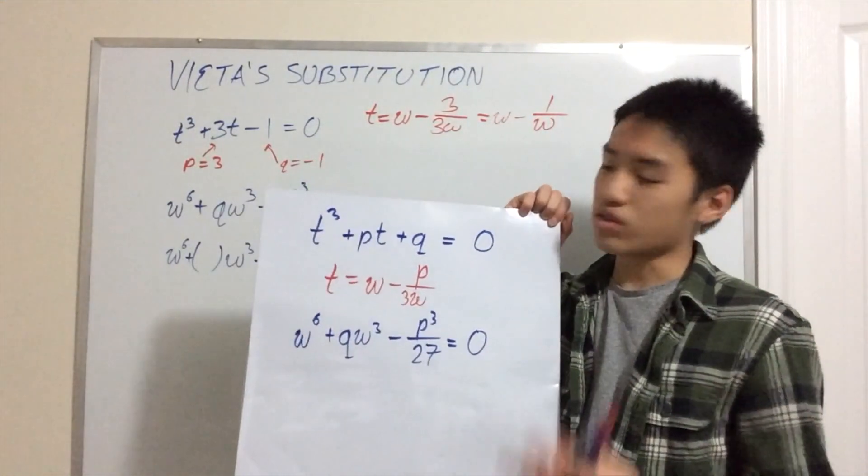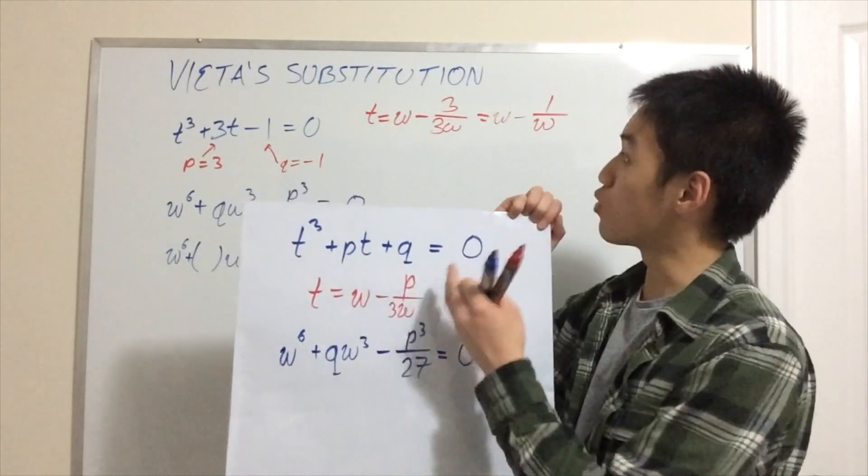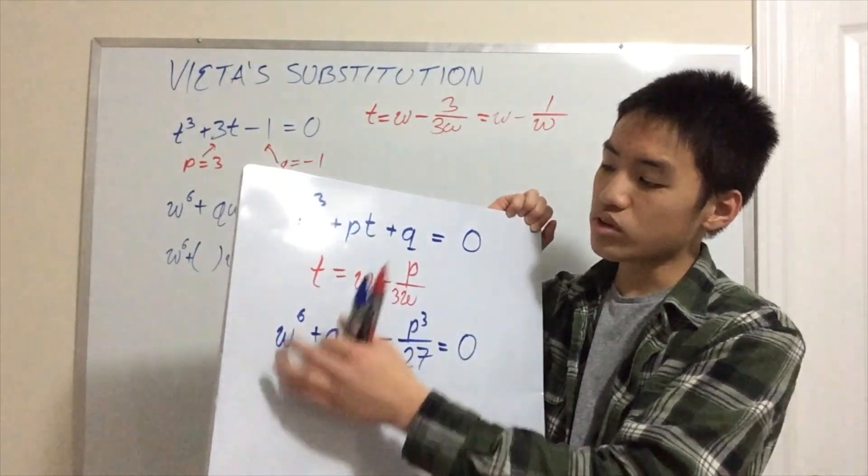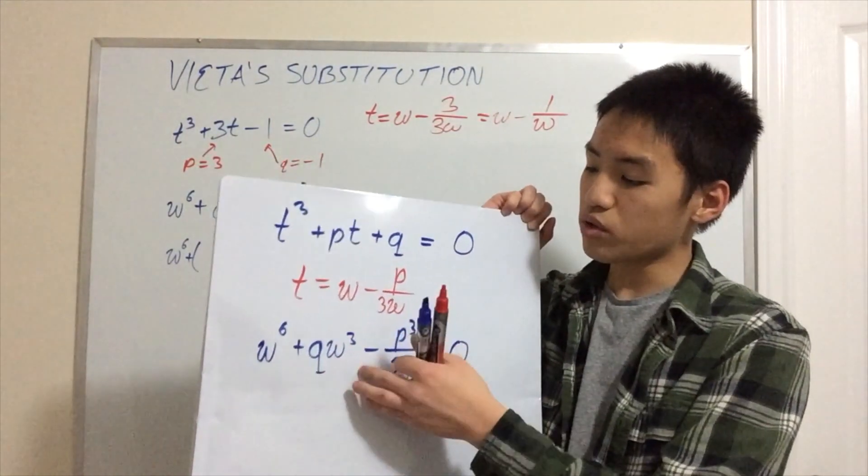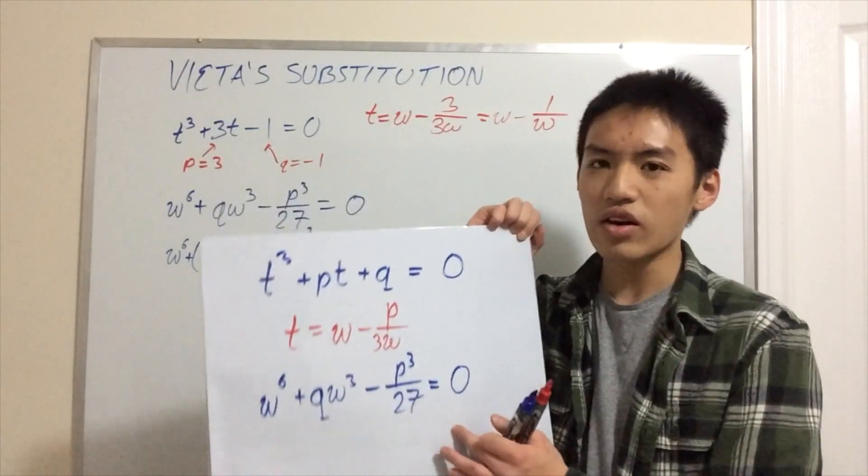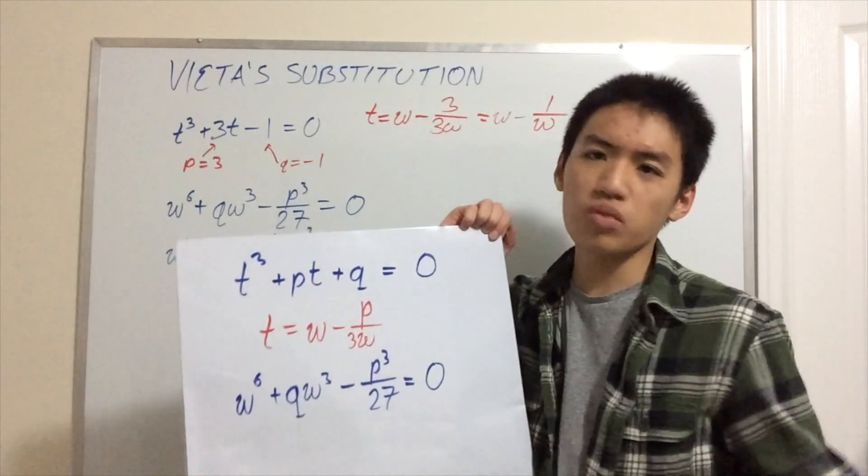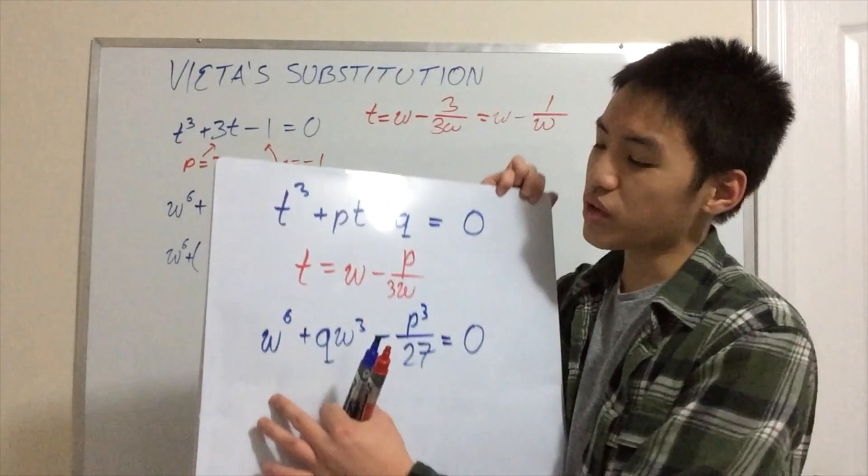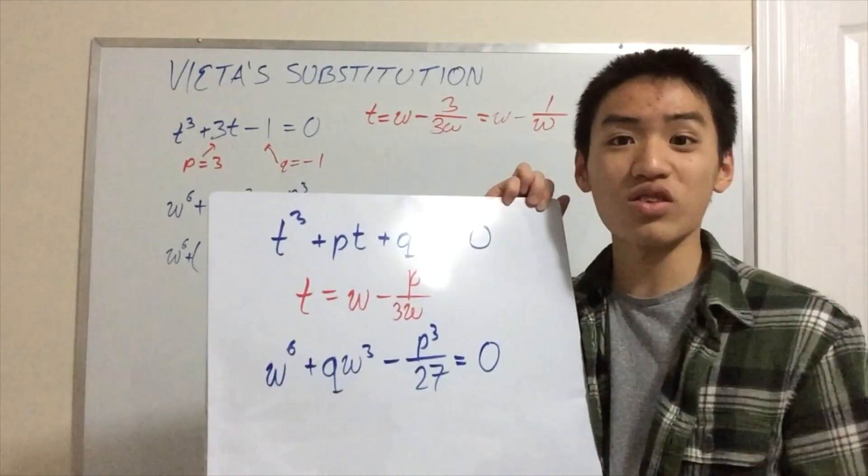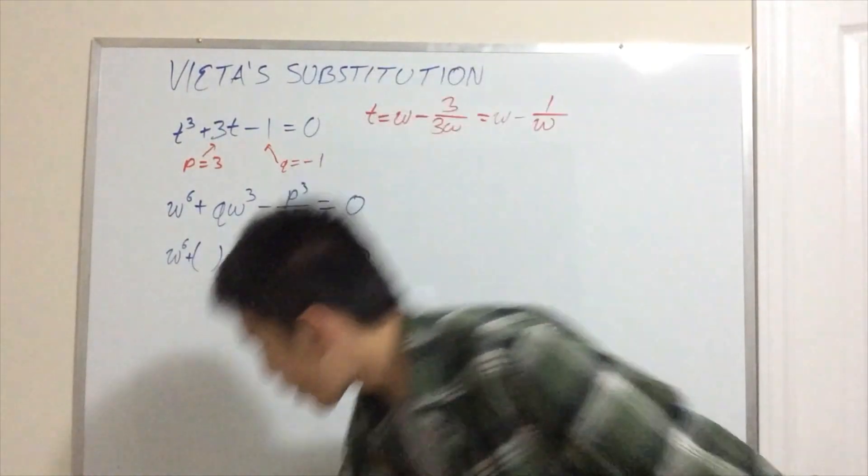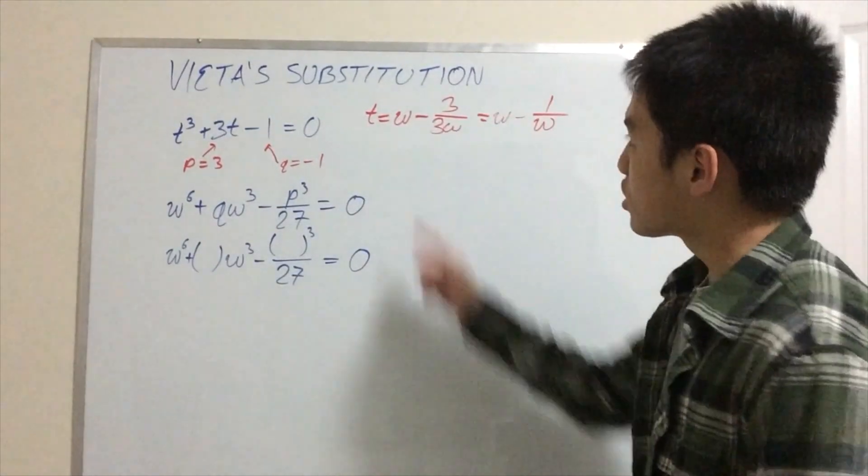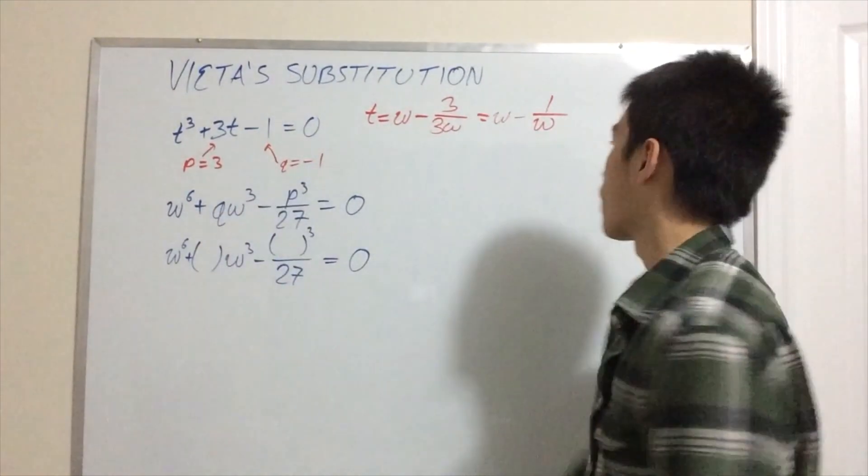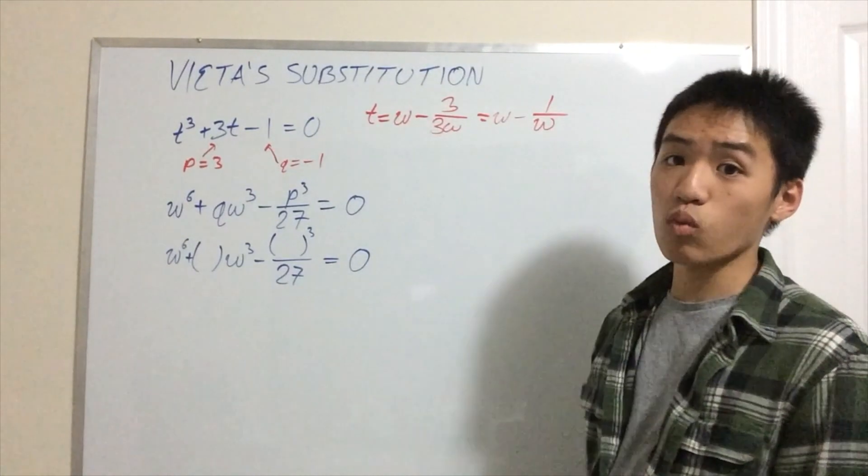Vieta's substitution is, quick reminder, t = w - p/(3w). I also have it written up here. So, we have w⁶ + qw³ - p³/27 = 0. After we plug this in and expand and multiply by w³ and all of that. And the reason we did this, of course, was because this is just a quadratic equation and we know how to solve quadratic equations. So, here we have it. We're going to make a substitution. t = w - p/(3w). p is just 3.